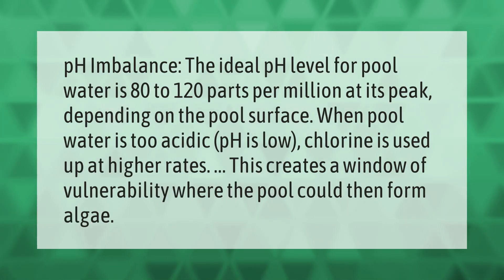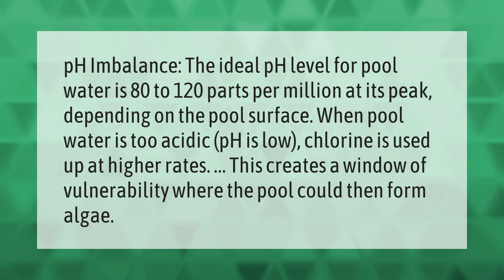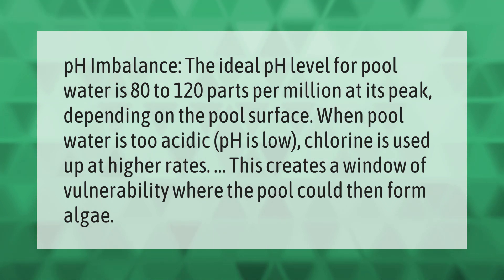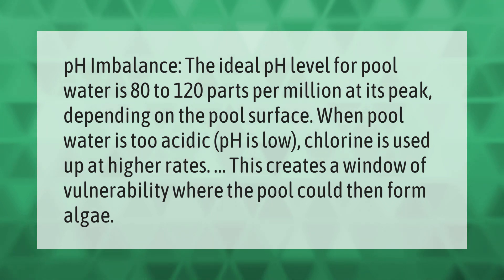The ideal pH level for pool water is 7.2 to 7.8. When pool water is too acidic and pH is low, chlorine is used up at higher rates. This creates a window of vulnerability where the pool could then form algae.